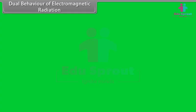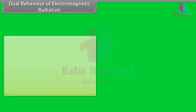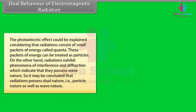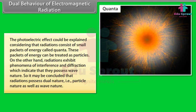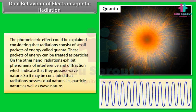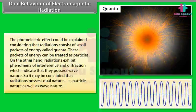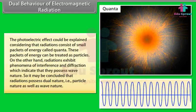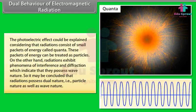Dual behavior of electromagnetic radiation: The photoelectric effect can be explained by considering radiation as small packets of energy called quanta, treated as particles. On the other hand, radiation also exhibits interference and diffraction, indicating wave nature. It may be concluded that radiation possesses dual nature — both particle nature and wave nature.